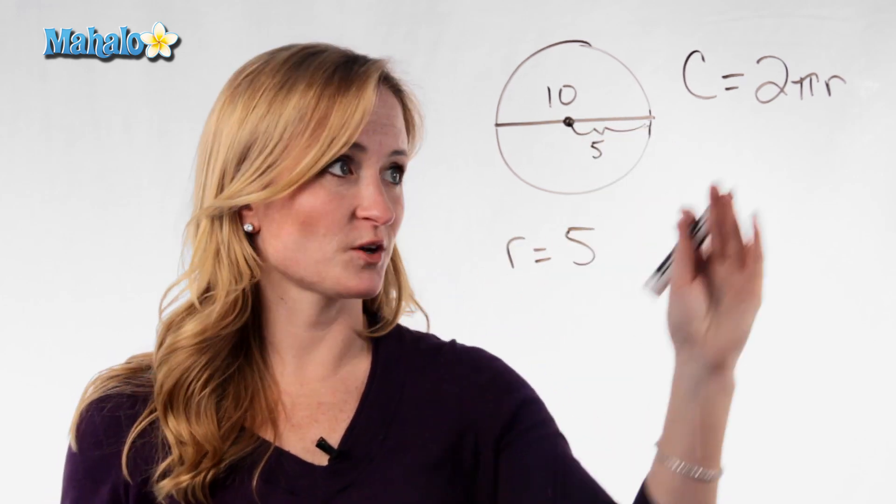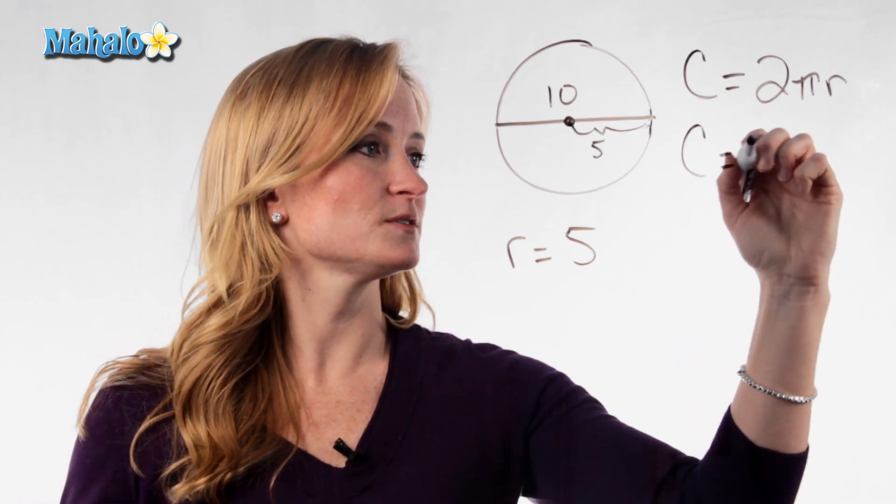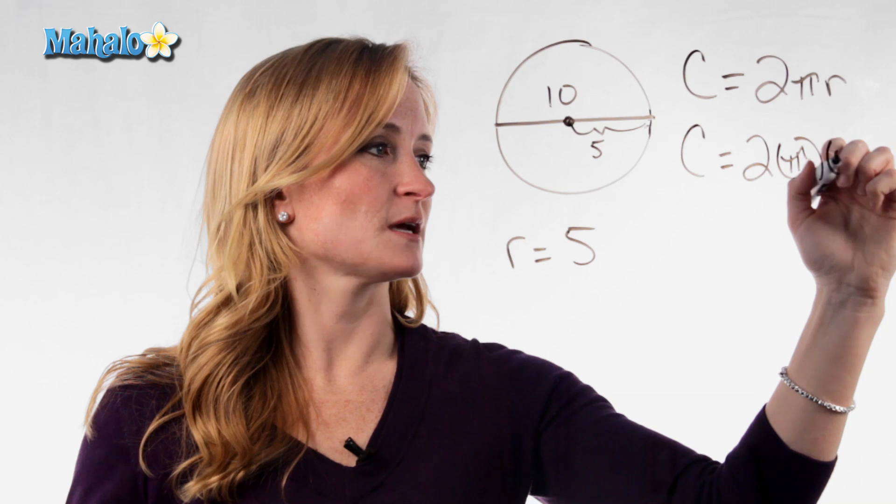Once you've found your radius, go ahead and plug it back into the formula. So C equals 2 times pi times 5.